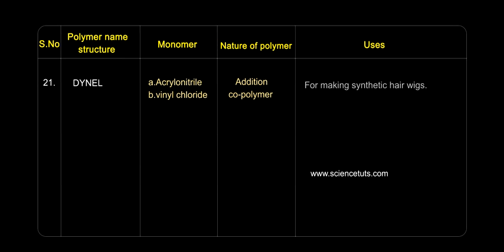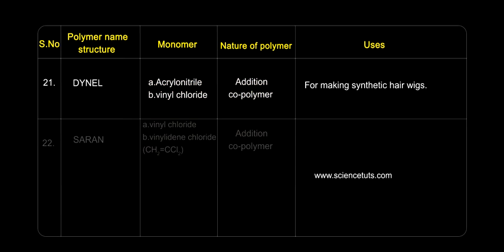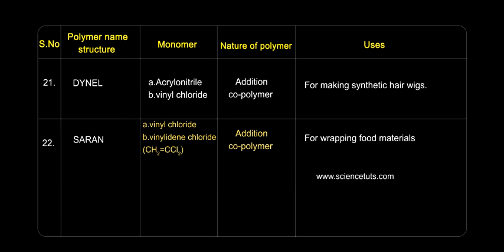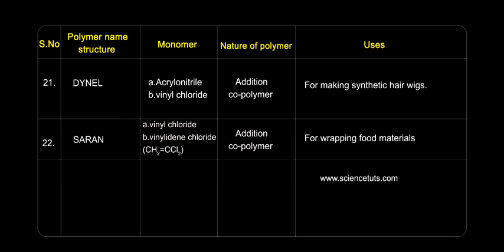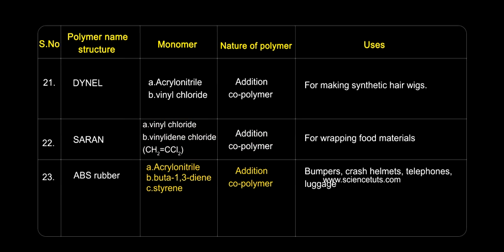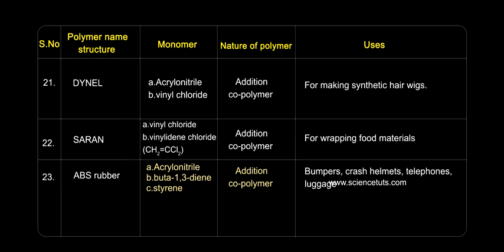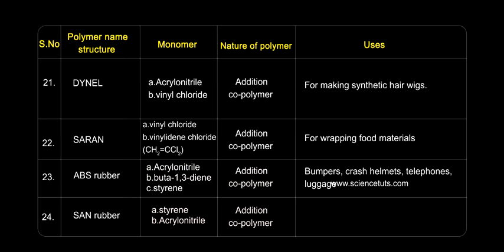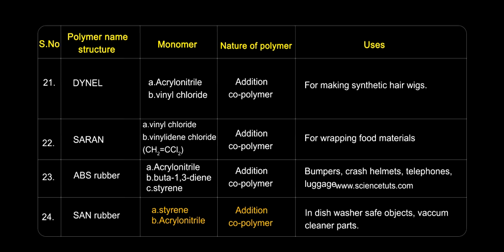Dynel: used for making synthetic hair wigs. Saran: used for wrapping food materials. ABS rubber: used in bumpers, crash helmets, telephones, and luggage. SAN rubber: used in dishwasher-safe objects and vacuum cleaner parts.